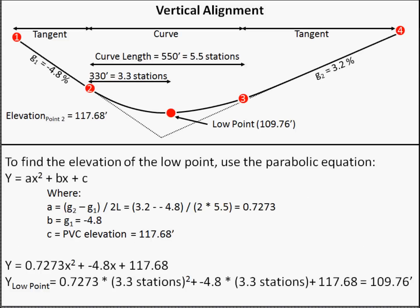To find the elevation of the low point, we can use the parabolic equation and input our low point distance of 3.3 stations. Based on the parabolic equation that defines this curve, we can find an elevation of the low point of 109.76 feet. In summary, the low point of the curve occurs at 330 feet from the PVC at an elevation of 109.76 feet.